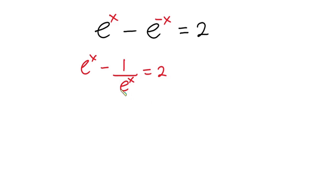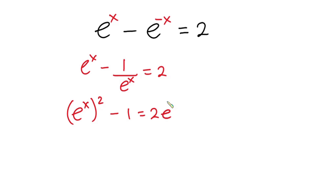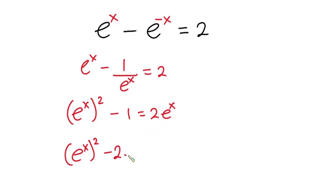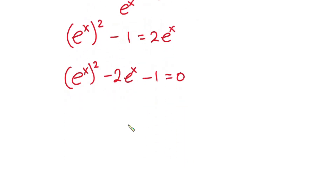Now let's go ahead and multiply both sides by e to the power x. So we have e to the power 2x minus 1 is equal to 2 times e to the power x. Equating everything to zero, we have e to the power 2x minus 2e to the power x minus 1 is equal to zero.